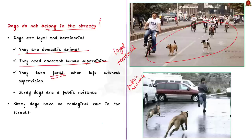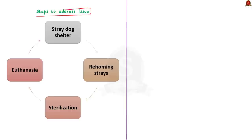Dogs play no ecological role when left unsupervised in streets or public places. There are some steps that can be taken to address the issue of stray dogs. First, placing stray dogs in a shelter away from the public place. Secondly, stray dogs can be rehomed to a new owner. The next option is sterilization to prevent uncontrolled breeding. And finally, we have the option of euthanasia, which is the act of killing an animal in the most humane way possible, done only in the worst-case scenario.